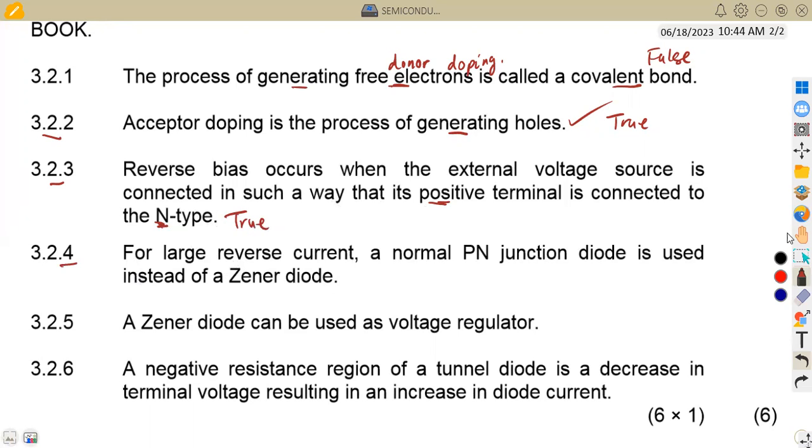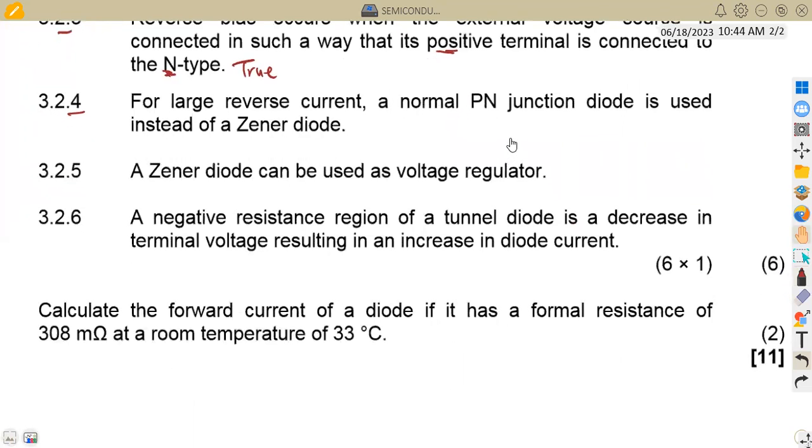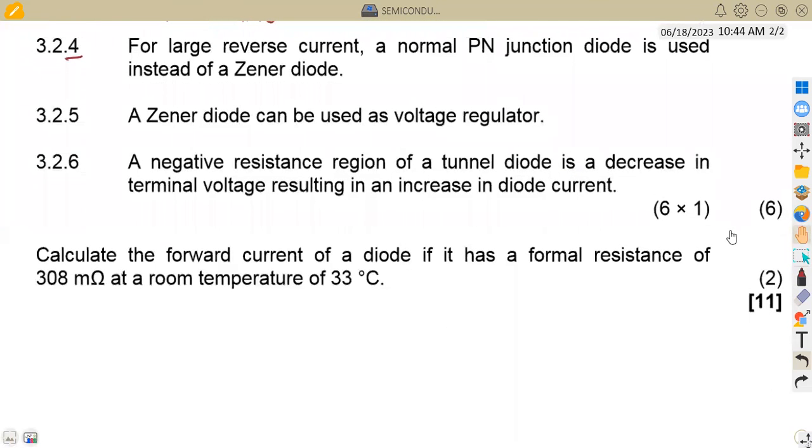3.2.4, for large reverse current, a normal PN diode is used instead of a Zener diode. This is false. A Zener diode is actually the one that is used for reverse current in this case. A normal diode operates in a forward bias. So meaning to say it must be forward biased. But for it to be reverse biased, that is a Zener diode.